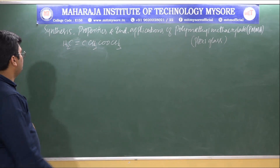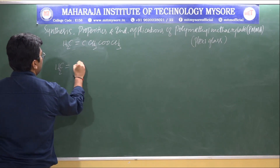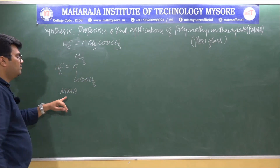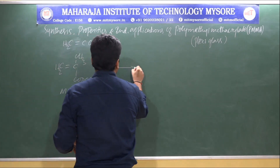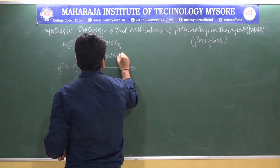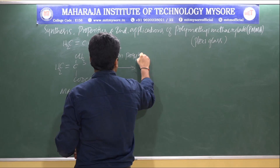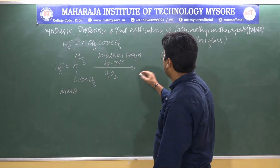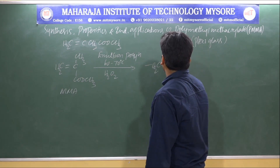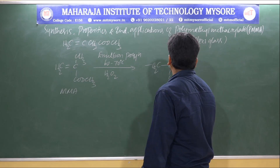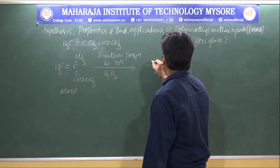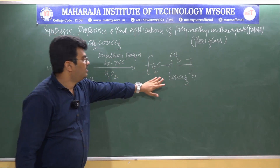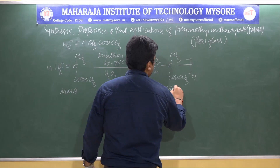The polymerization reaction: n moles of CH2=C(CH3)–COO–CH3 (methyl methacrylate, MMA) undergo emulsion polymerization at 60–70°C in the presence of H2O2, giving the polymer —C(CH3)(COO–CH3)–CH2—n, which is polymethyl methacrylate, also known as PMMA or plexiglass.